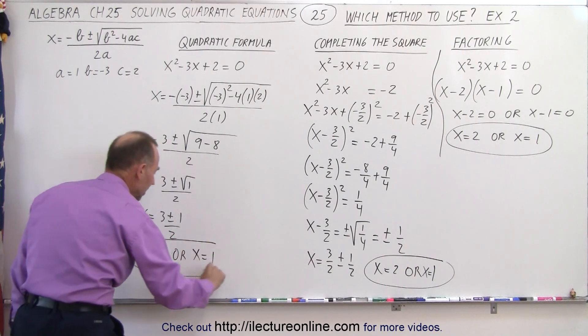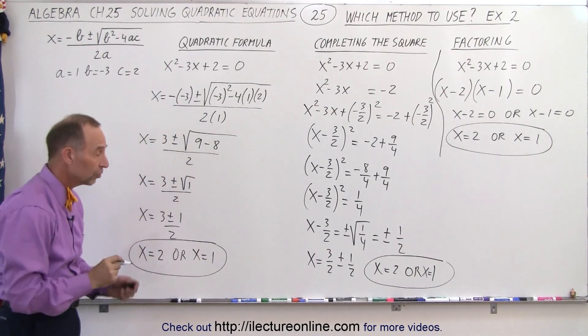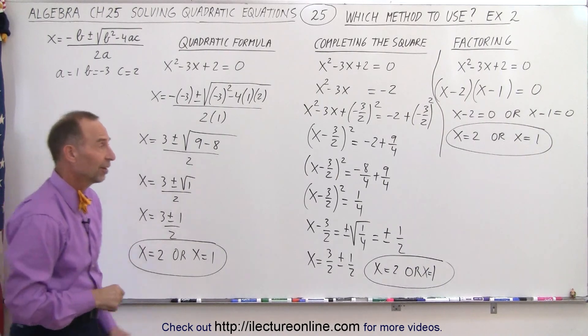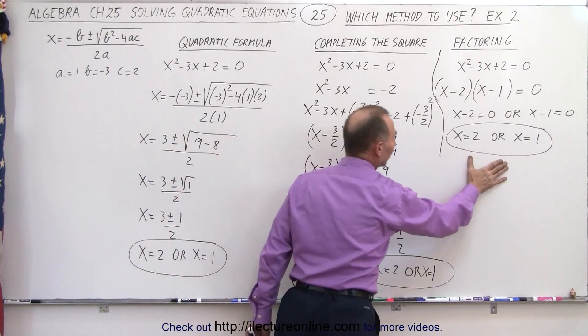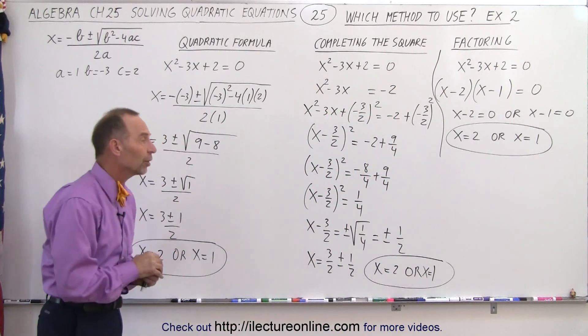And notice, again, the very same two solutions. Now, which method was fastest? By all means, factoring was fastest. If we can factor it easily, that's the quick way to go.